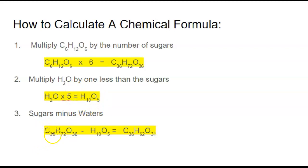Now all I have to do is take my sugars minus my waters to get my answer. So I've got C36 minus H10, and H72 minus H10, O36 minus O5. Here there's no C's, so I'm just going to keep that at thirty-six. My H is seventy-two minus ten, so I'm going to have sixty-two. And my O's thirty-six minus five, so thirty-one.